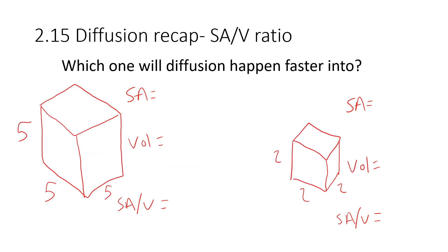You don't actually have to do these calculations in your exams, but if you're struggling to understand surface area to volume ratio I think this will help. Pause the video now and have a go at working out the surface area to volume ratio for both of these cubes, and decide which one will have faster diffusion.